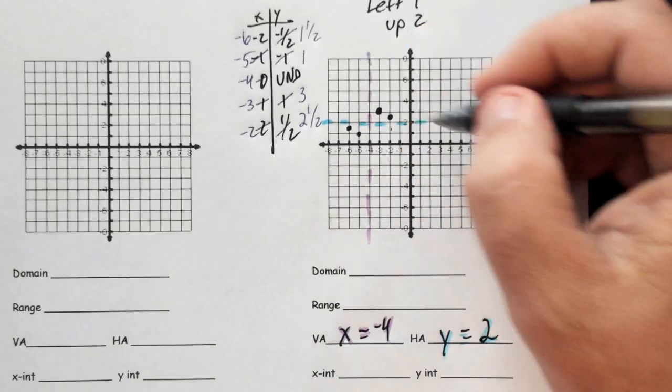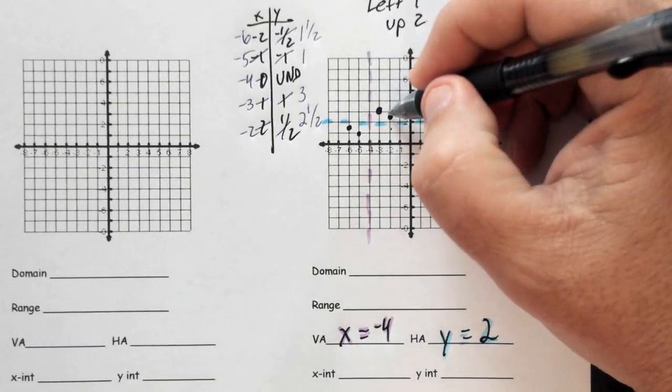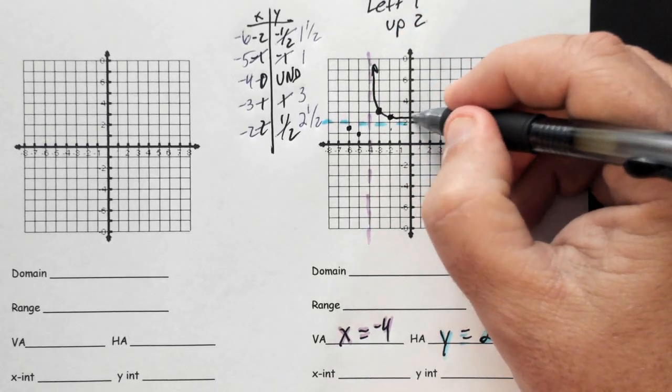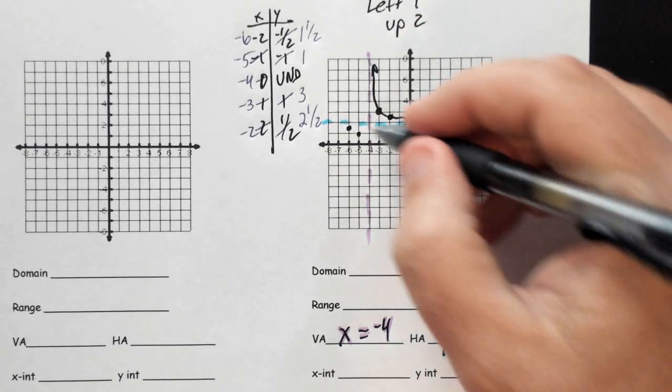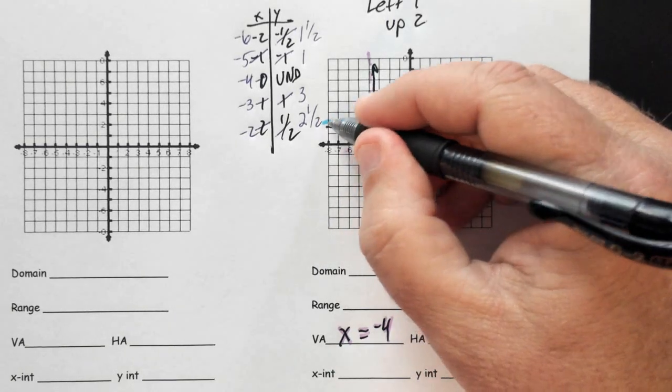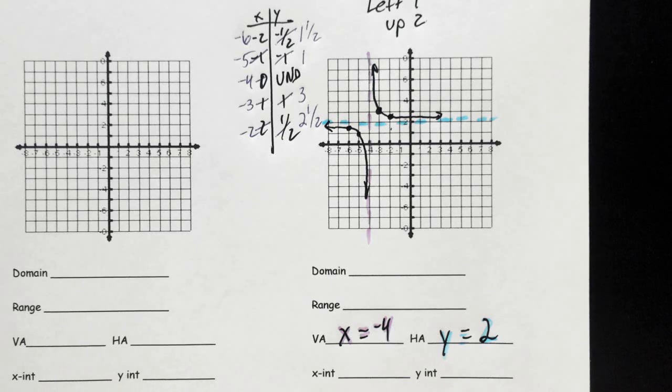Now, how do I graph those? Once we know what our asymptotes do, remember, it gets closer and closer. So it's going to get closer and closer here, closer and closer here, and that's the graph we're going to have. This is just sketching it as it gets closer and closer and not going through the asymptotes.